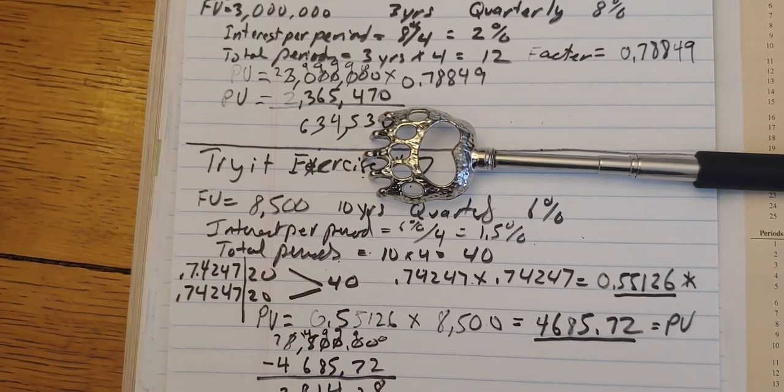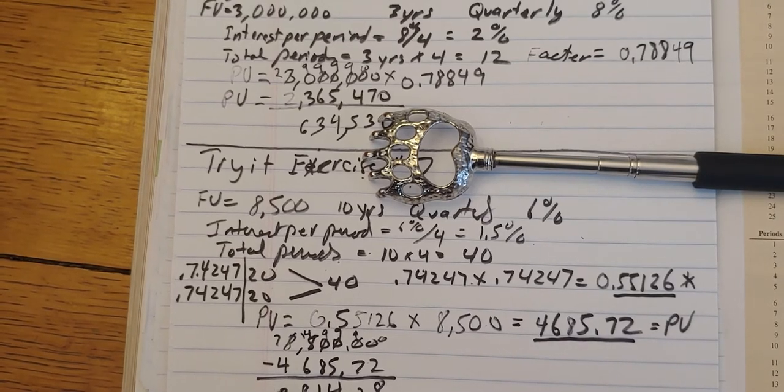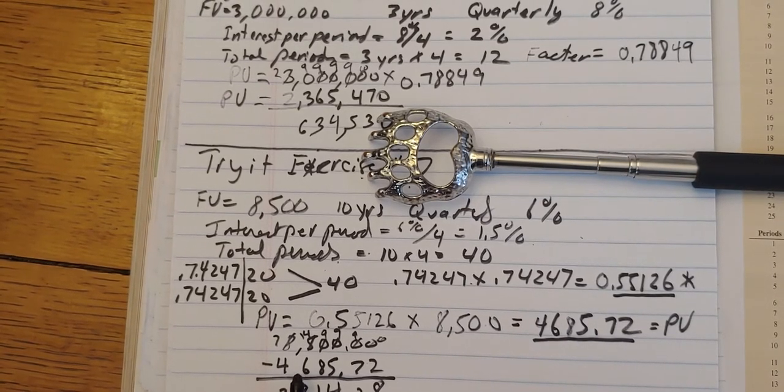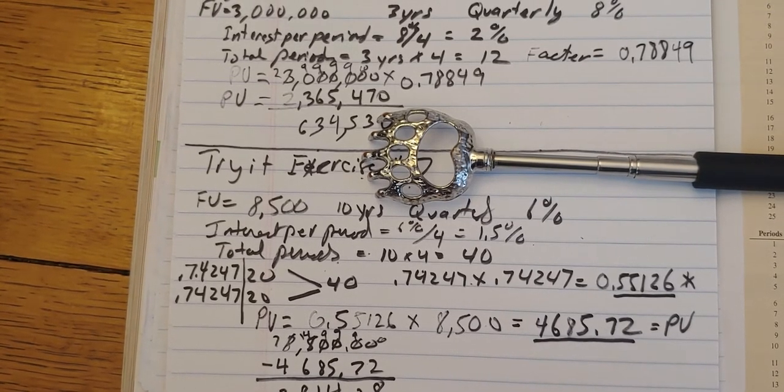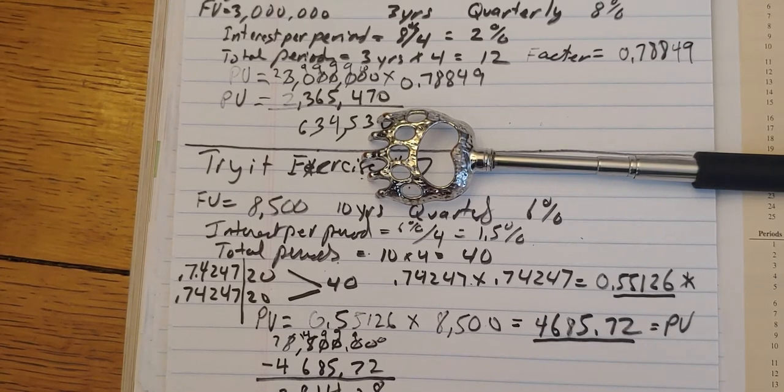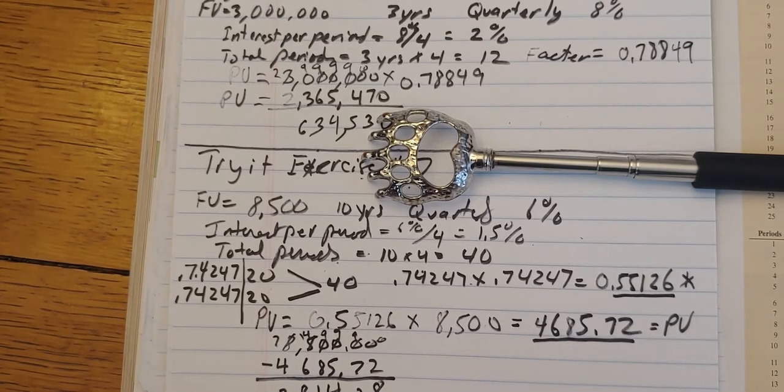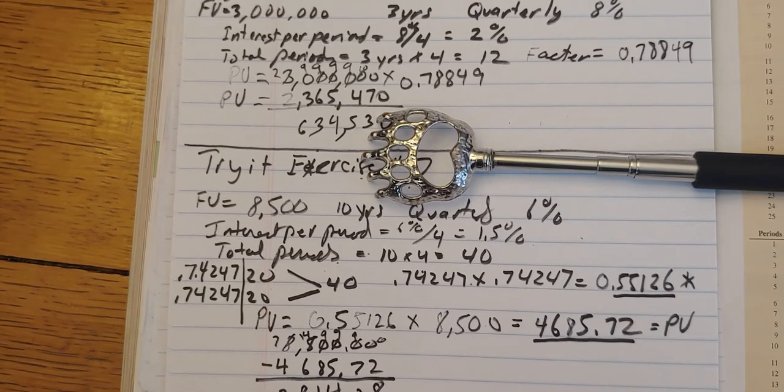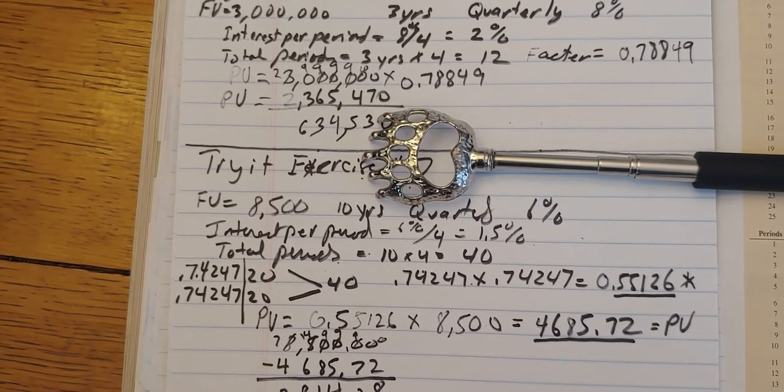So we're going to earn $3,814.28. So if our present value is $4,685.72, we're only about $470 from actually doubling our money.